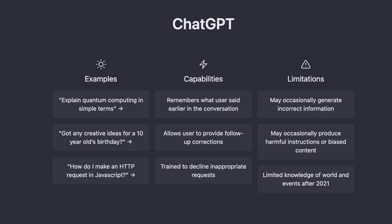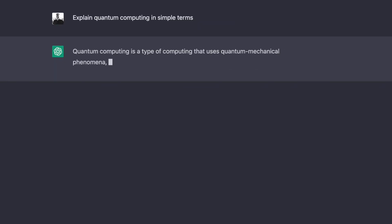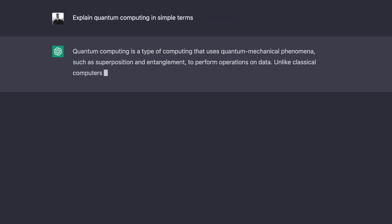You can use ChatGPT to explain complicated topics. So if you want to understand what machine learning is, or what quantum computing is, it will give you a succinct overview of what this is.